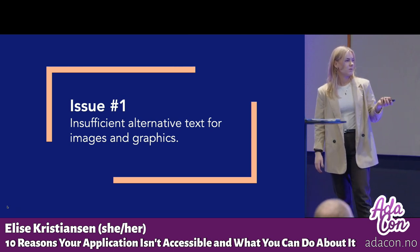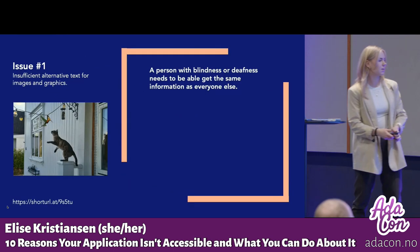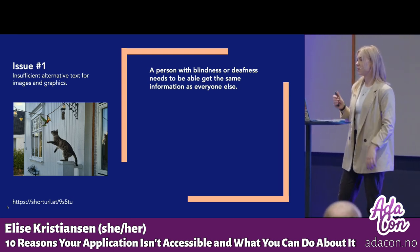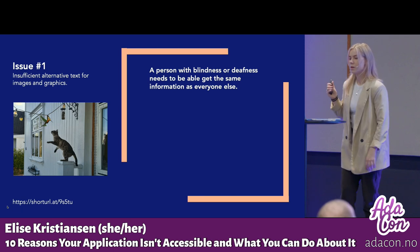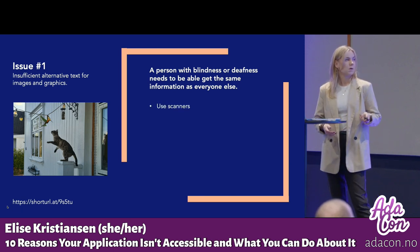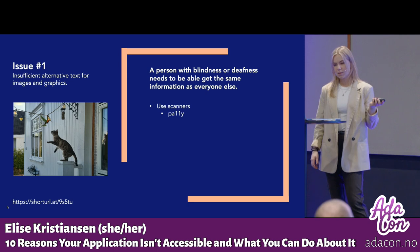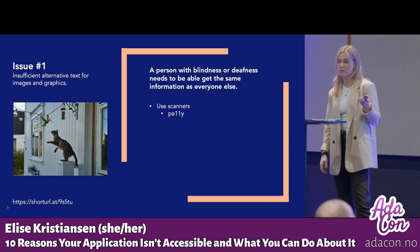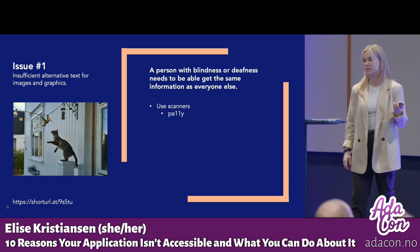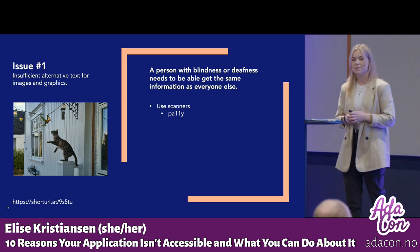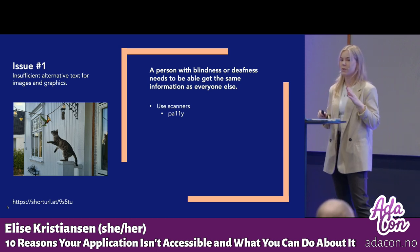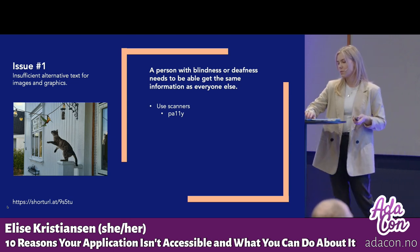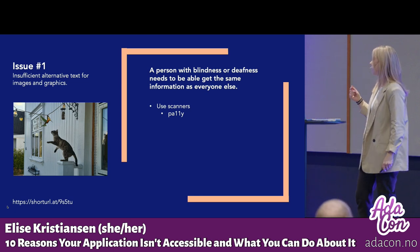Issue number one: insufficient alternative text for images and graphics. A person with blindness or visual impairment needs to be able to get the same information as everyone else. To detect some of these issues you can use a scanner. My favorite is Pally, an open-source accessibility testing tool that helps developers and designers identify and fix accessibility issues on websites and web applications.